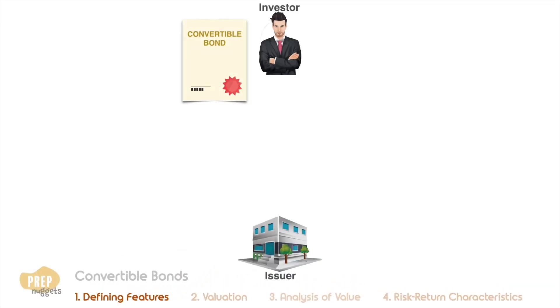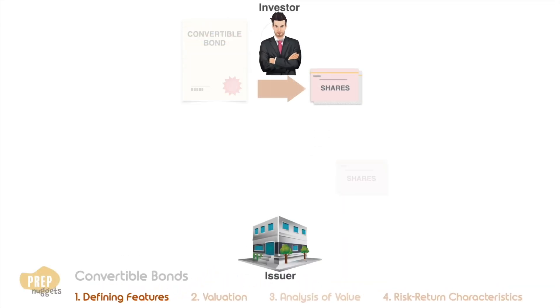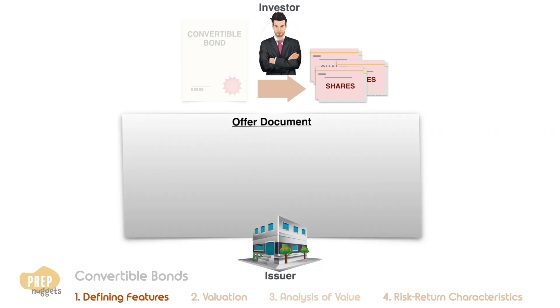Convertible bonds give bondholders the option to exchange the bond for a specific number of shares of the issuer's common stock. At issuance, the offer document will define some of the key terms of the bond.